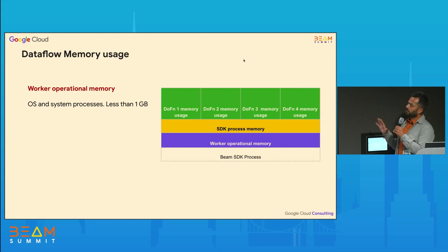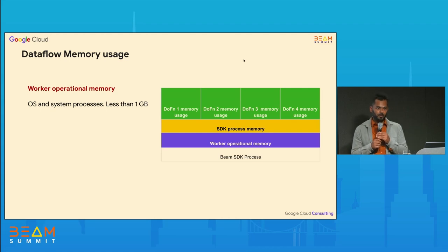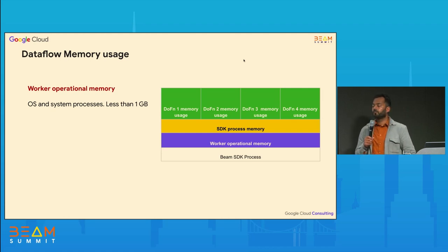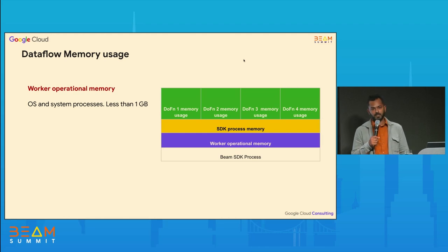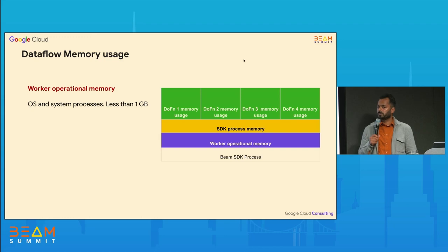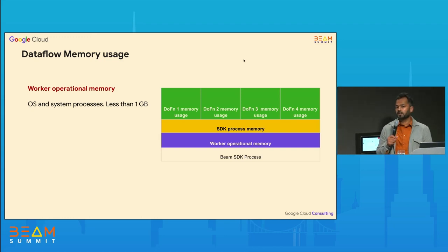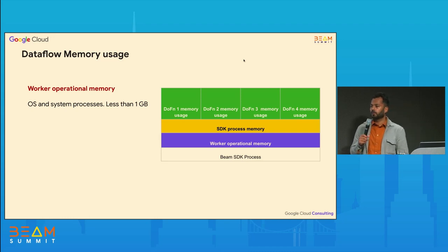This memory usage is for a Beam SDK process. In Dataflow, you can have more than one Beam SDK process — specific to Python, for example, where you can have one SDK process per vCPU. Depending on the number of vCPUs in the worker, you can have multiple SDK processes. For Java, it's straightforward: one SDK process per worker.